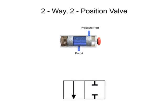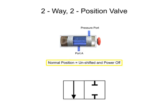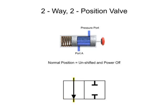Next, lines are drawn to indicate the normal position of the valve. The normal position is defined as the position of the valve when its spool is unshifted and the power is off. This means that any mechanical actuators, such as springs, are in their non-actuated positions. Electrical actuators, such as solenoids, are powered off. The normal position can sometimes be referred to as the unshifted, de-energized, or unactuated position. In this case, position 1 is the normal position. Therefore, the lines to indicate the normal position are drawn in the first box.